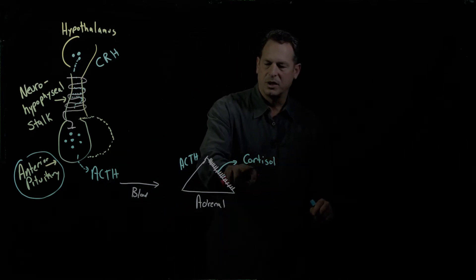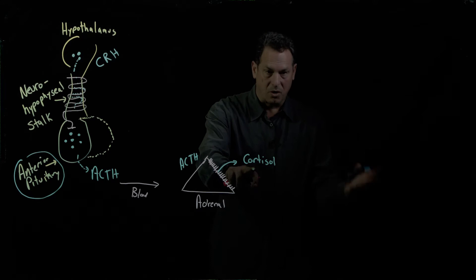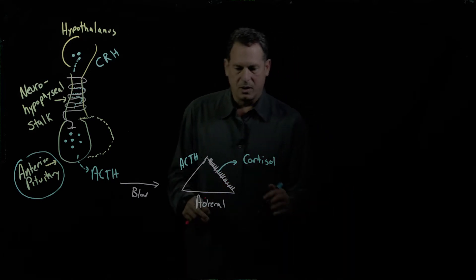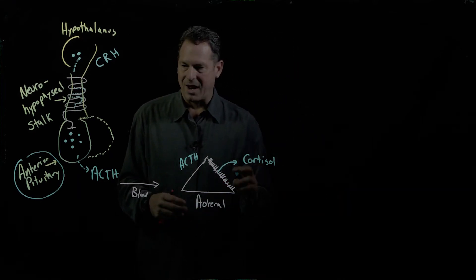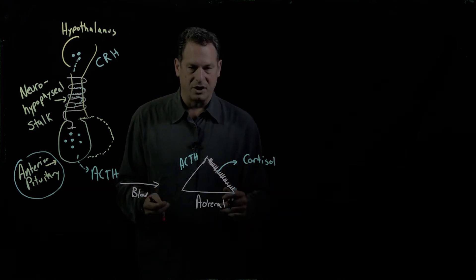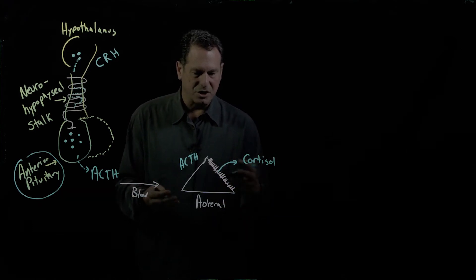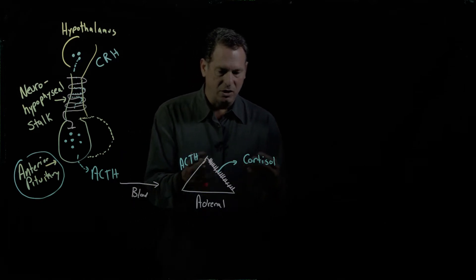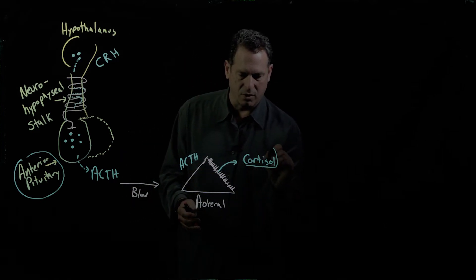And the precursor to cortisol is cholesterol. So cortisol is a steroid hormone and cholesterol is a substrate for the formation of these steroid hormones. Cholesterol metabolism in this sense is quite useful for the production of cortisol.